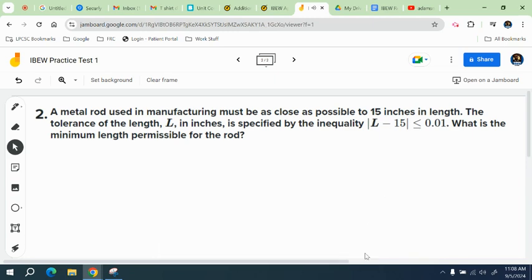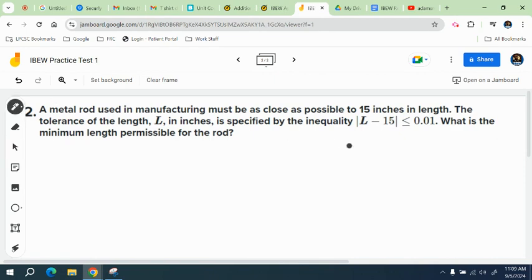Alright, so for this one, it's a metal rod used in manufacturing must be as close as possible to 15 inches in length, and the tolerance is L, and it's specified by this inequality here. L minus 15 is less than or equal to this. What is the minimal length permissible for the rod? So to do this problem...